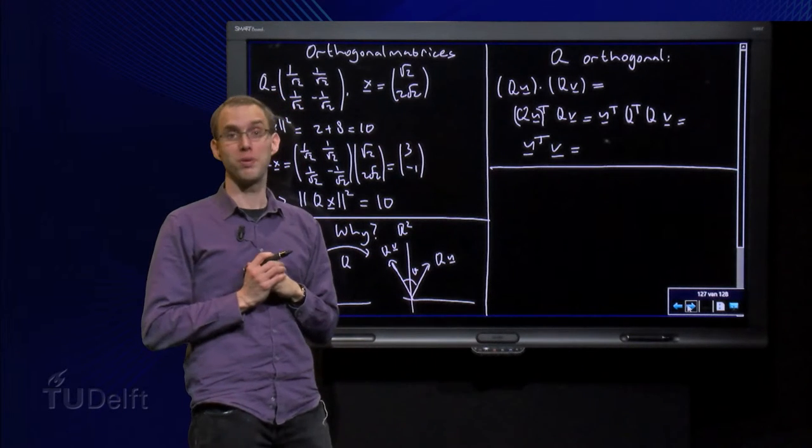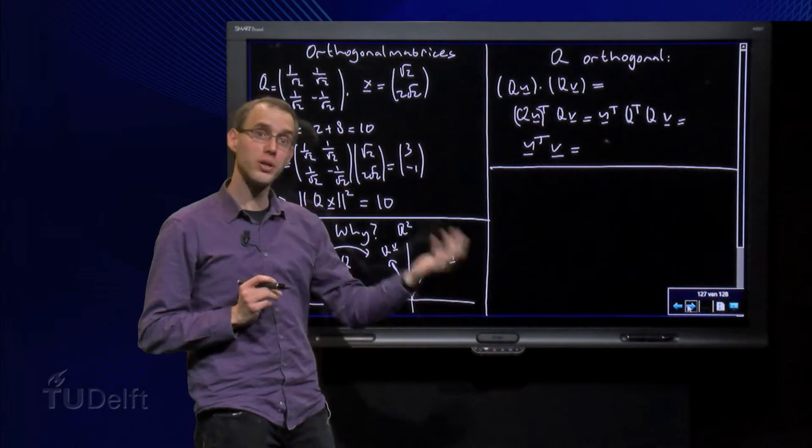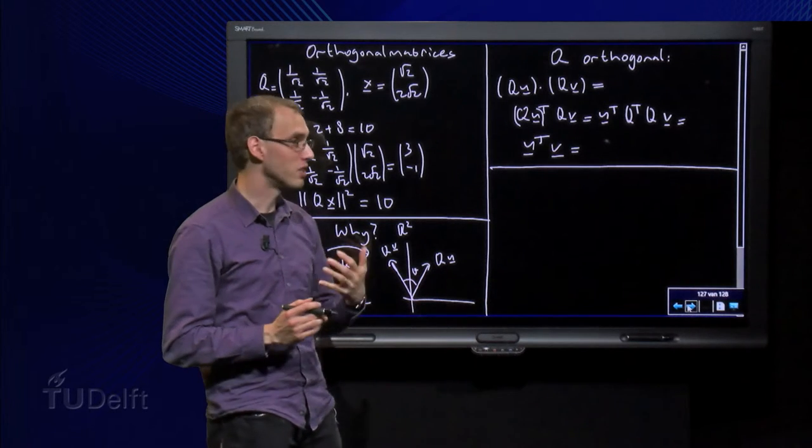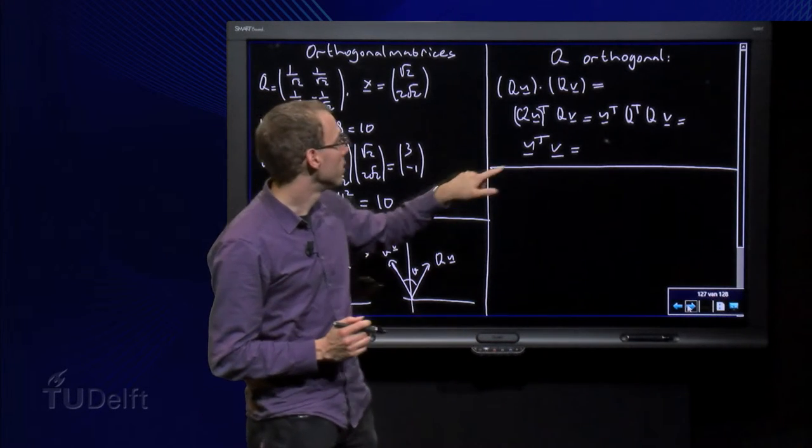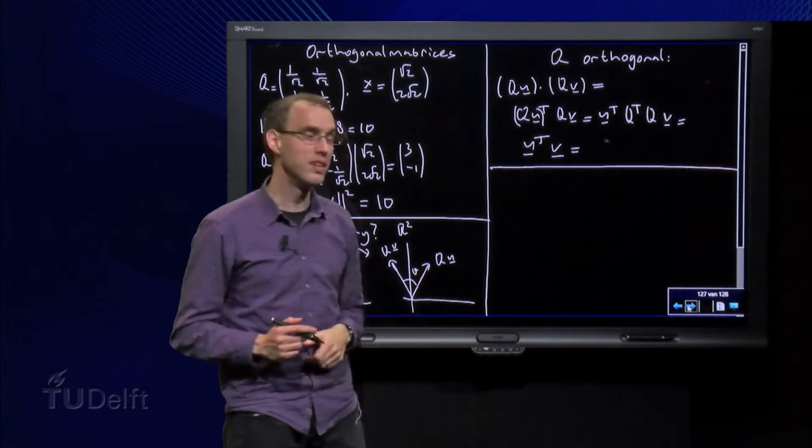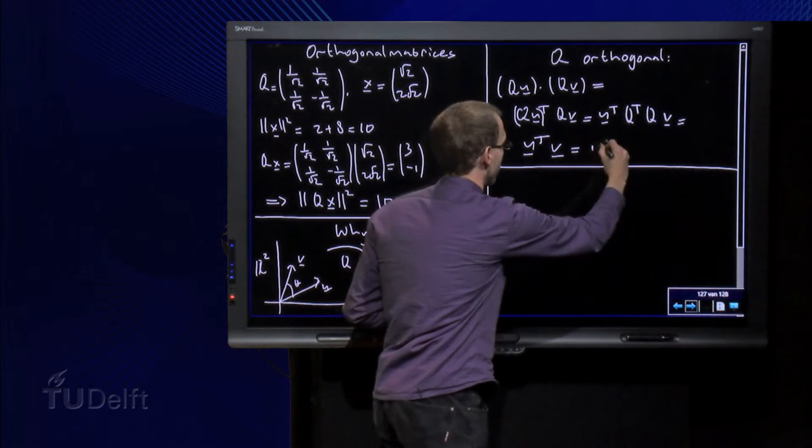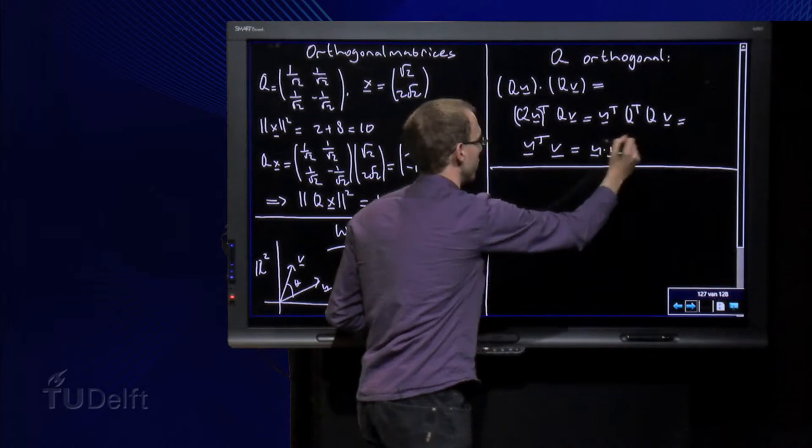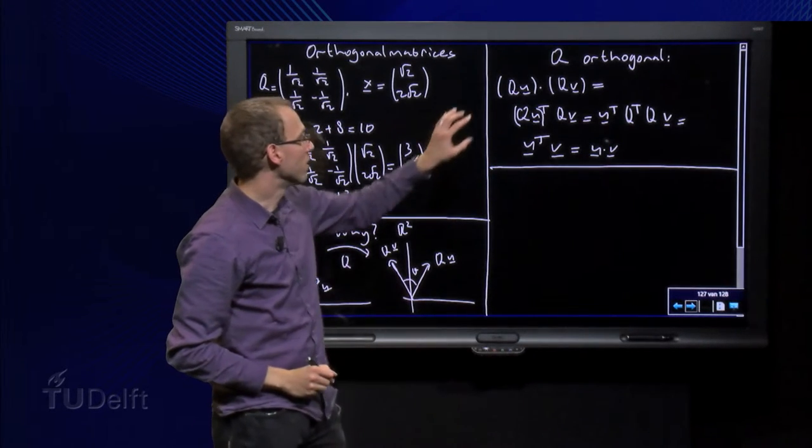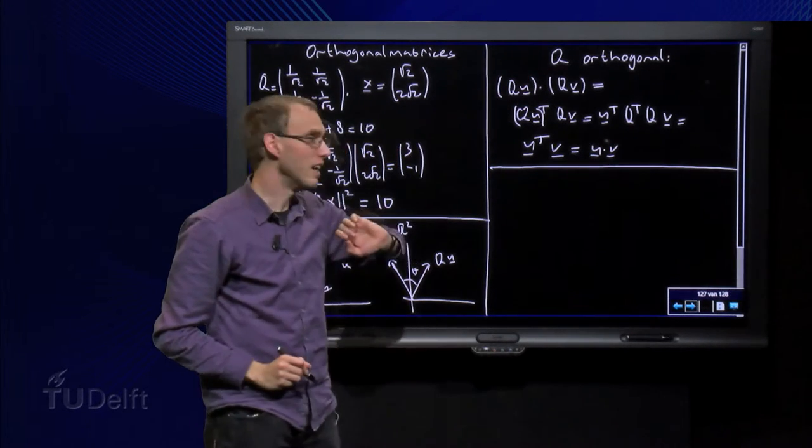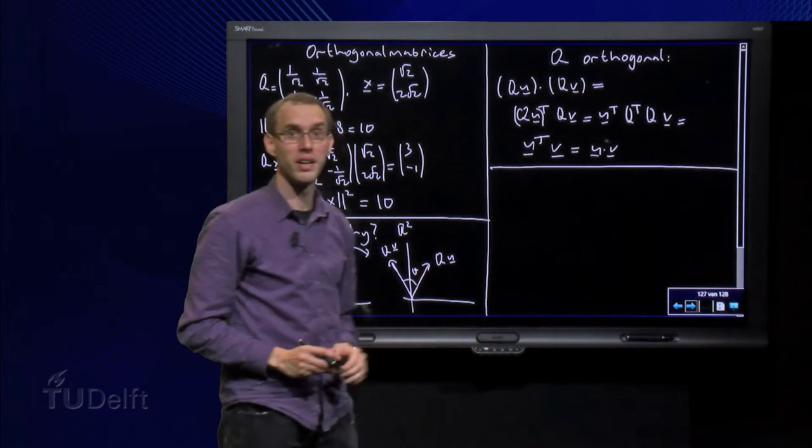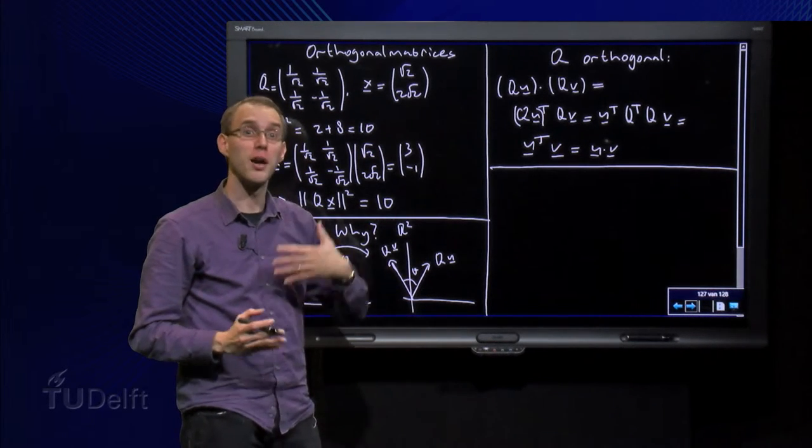And then we use the property of orthogonal matrices: Q transpose times Q equals the identity matrix. We get U transpose times V, and that is just U inner product with V. So we see that the inner products in the range are the same as the original inner products. The inner products are preserved.